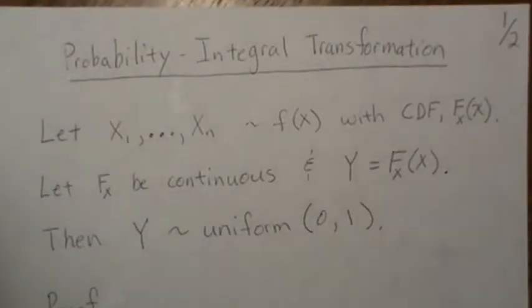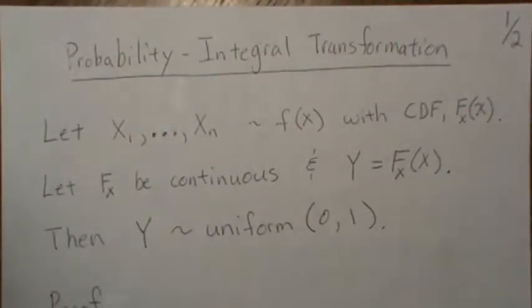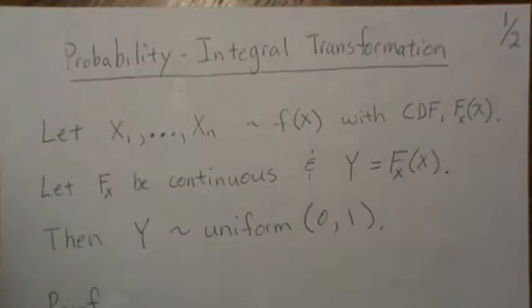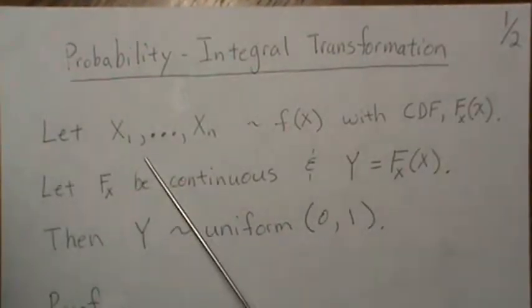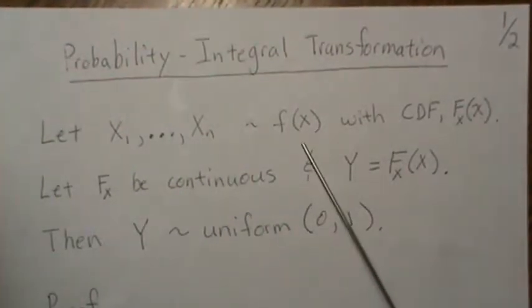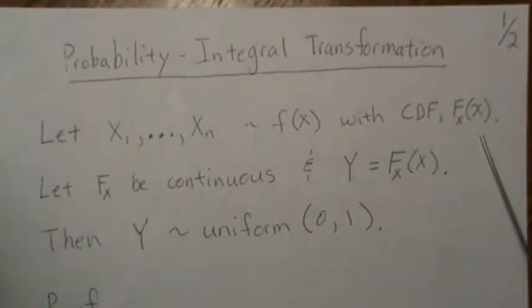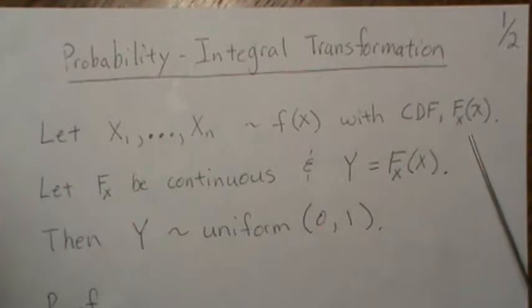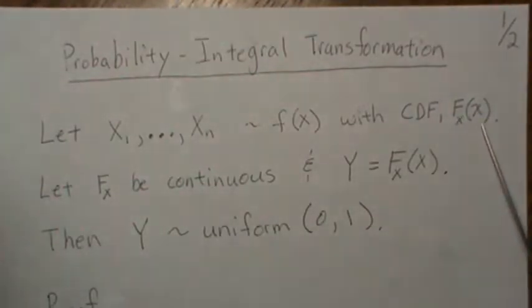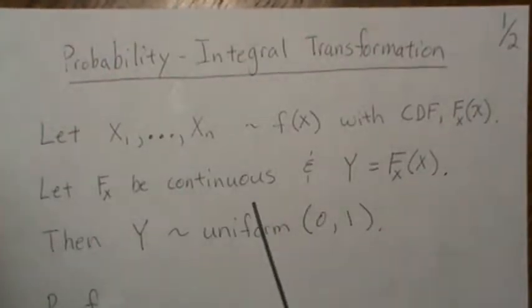In this video we're going to look at the probability integral transformation. We'll state it as if we have a random sample from some distribution with a CDF, a continuous distribution function F. Let X represent that it's from this distribution - it has to be continuous.